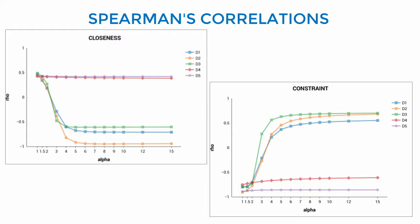D4 and D5 are not so much affected by the variation of alpha, and their correlations remain positive.